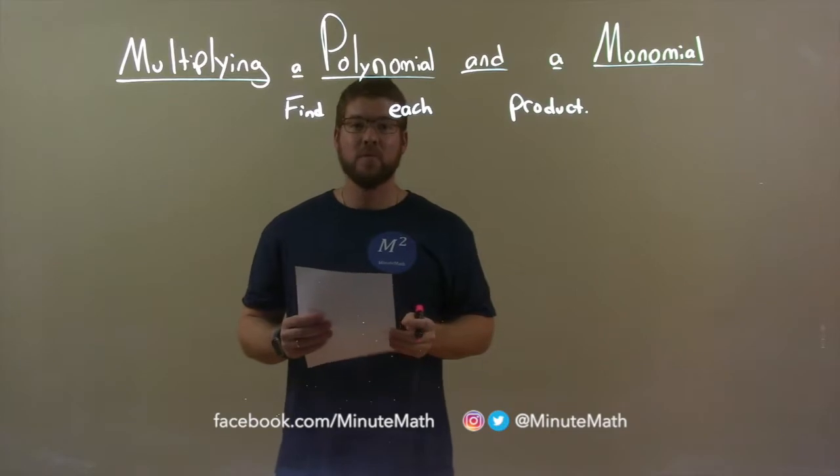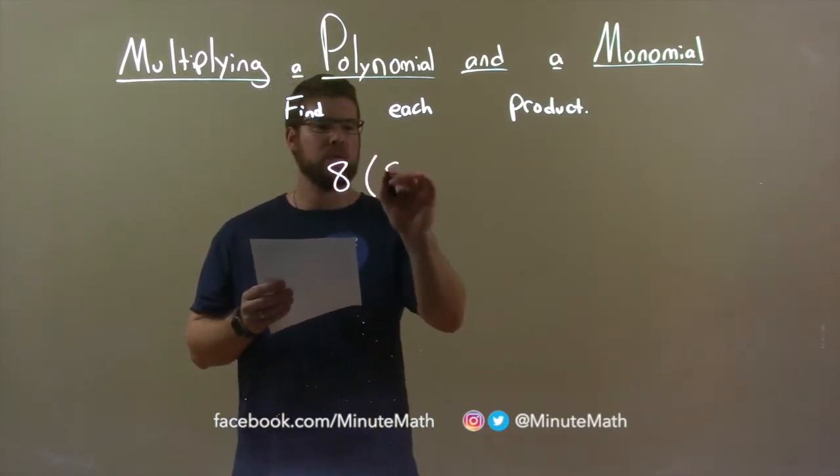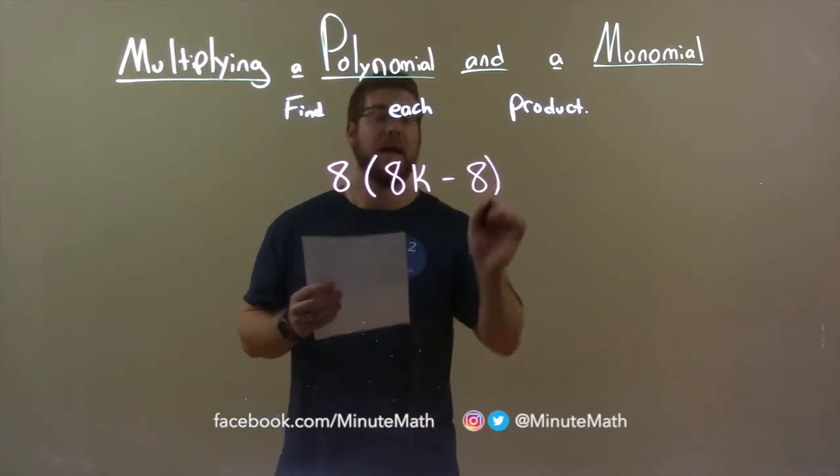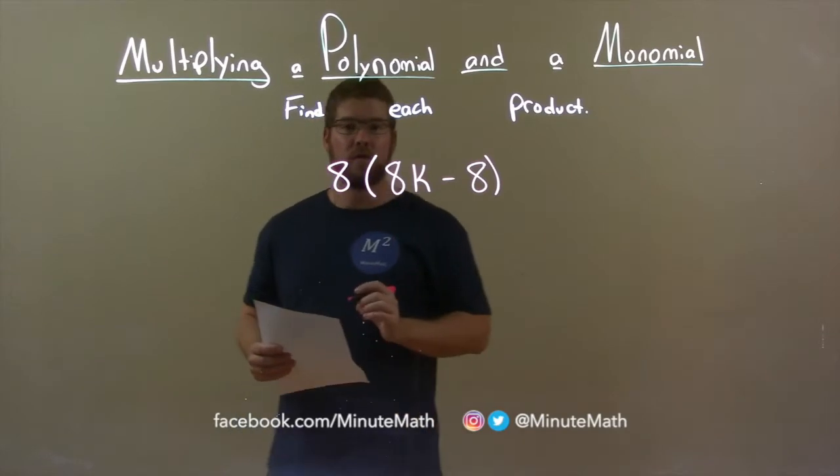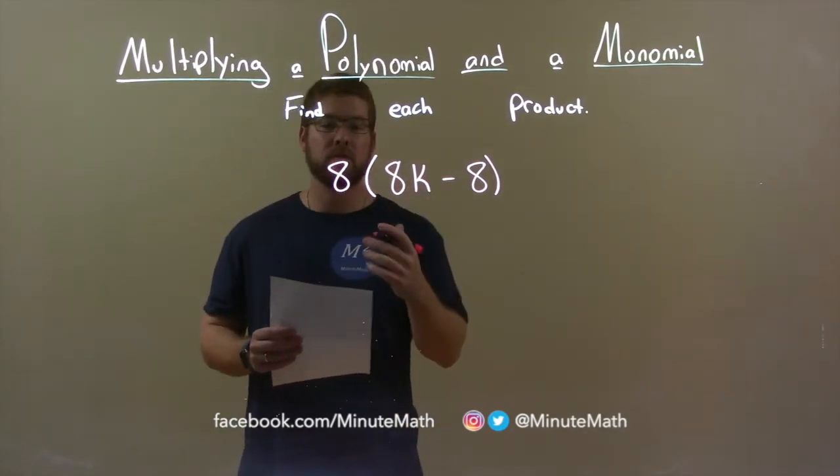If I was given this product, 8 times 8k minus 8, the first thing I want to do is distribute this 8 to both terms in the parentheses.